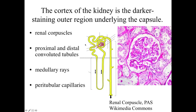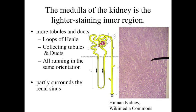If we take a look at the medulla, the medulla is going to be the inner region of the kidney. It's going to be a lighter staining with a more regular appearance. It's got lots of tubules and lots of ducts, and for the most part they're all going to be running in the same orientation. So we're going to have lots and lots of loops of Henle.